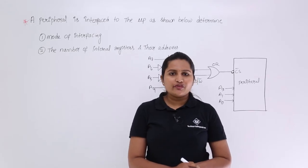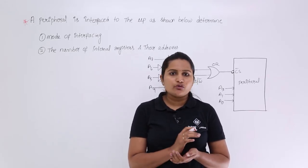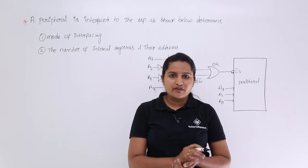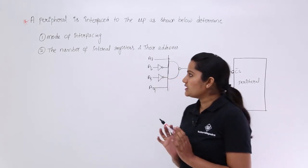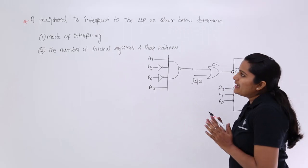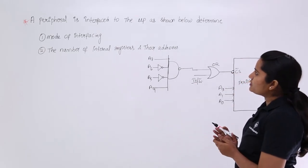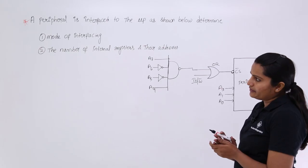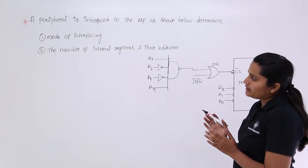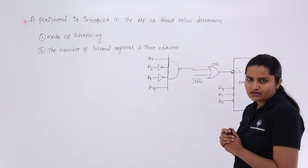In this video, we are going to discuss one more gate model related to interfacing with peripherals and addressing registers. A peripheral is interfaced to the microprocessor as shown below. We need to determine the mode of interfacing, the number of internal registers, and their addresses.